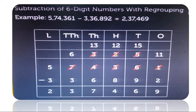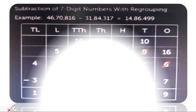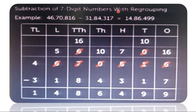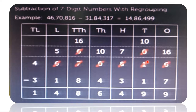Here we have another example of subtraction of 7-digit numbers with regrouping. 46,70,816 minus 31,84,317. We start from the units place. We couldn't subtract 7 from 6, so we will borrow from the tens place. 6 becomes 16. So 16 minus 7, we got 9.